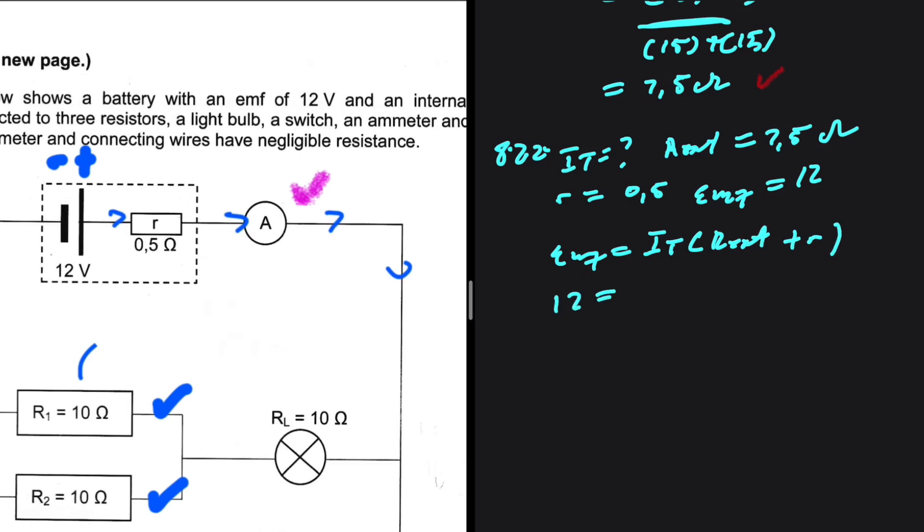EMF is 12. I total is what we're interested in. R external, 7.5. R internal, 0.5.